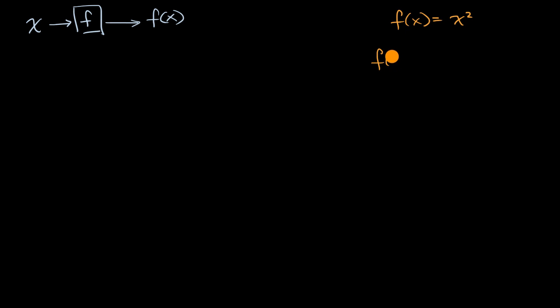You could have something defined like this: f of x is equal to x squared if x is odd, and you could say it's equal to x to the third otherwise. So if it's an odd integer, you just square it. But otherwise, for any other real number, you take it to the third power. This is a valid way of defining a function.